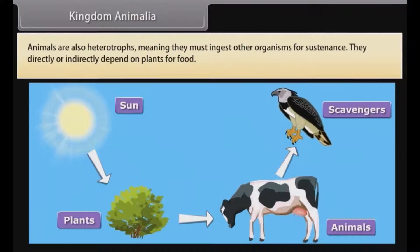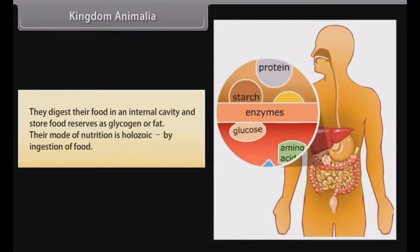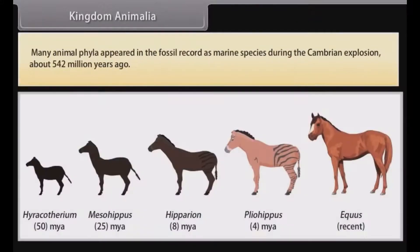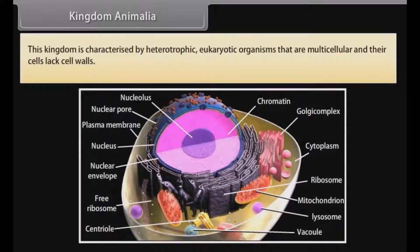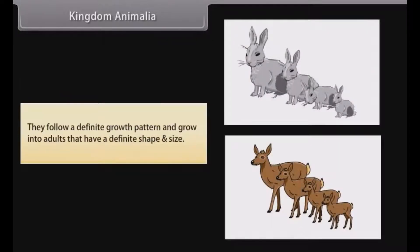They directly or indirectly depend on plants for food. They digest their food in an internal cavity and store food reserves as glycogen or fat. Their mode of nutrition is holozoic by ingestion of food. Many animal phyla appeared in the fossil record as marine species during the Cambrian explosion about 542 million years ago. This kingdom is characterized by heterotrophic eukaryotic organisms that are multicellular and whose cells lack cell walls. They follow a definite growth pattern and grow into adults that have a definite shape and size.